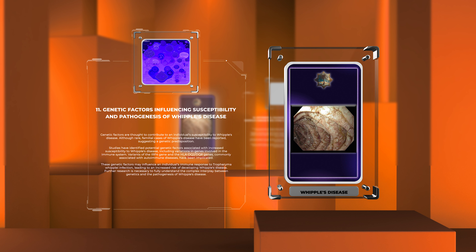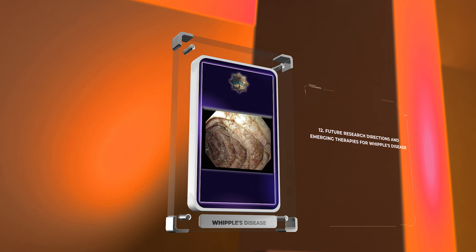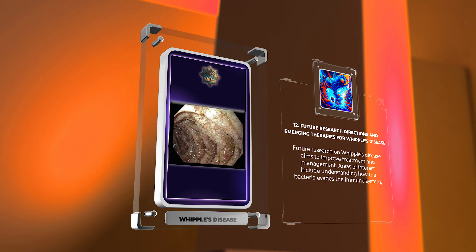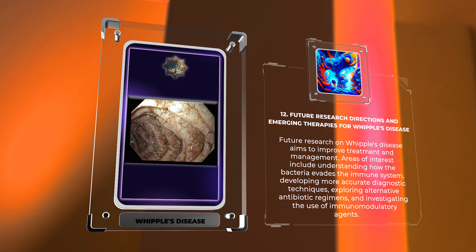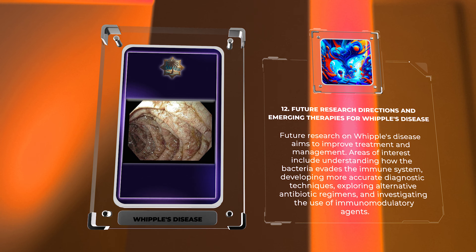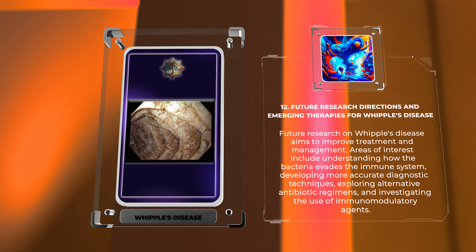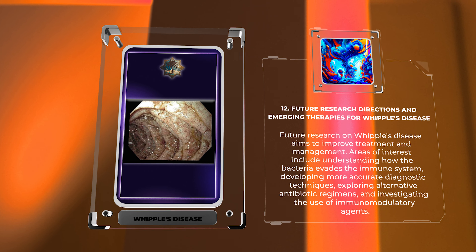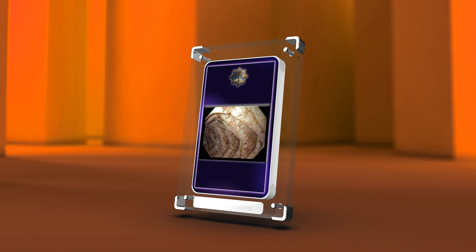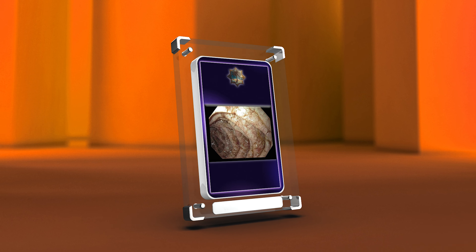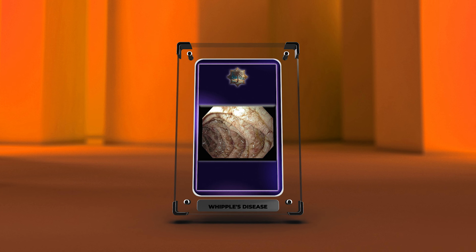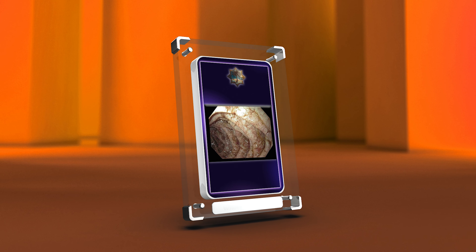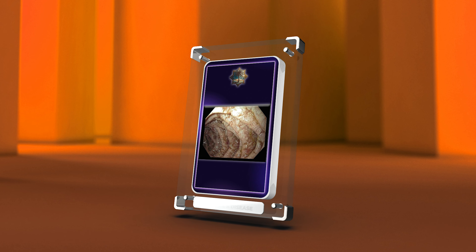Further research is necessary to fully understand the complex interplay between genetics and the pathogenesis of Whipple's disease. Future research aims to improve treatment and management, with areas of interest including understanding how the bacteria evades the immune system, developing more accurate diagnostic techniques, exploring alternative antibiotic regimens, and investigating the use of immunomodulatory agents. In conclusion, Whipple's disease is a rare gastrointestinal disorder caused by Tropheryma whipplei. Understanding its etiology, clinical features, diagnostic techniques, and treatment options is crucial for effective management. Continued research is needed to improve patient care.